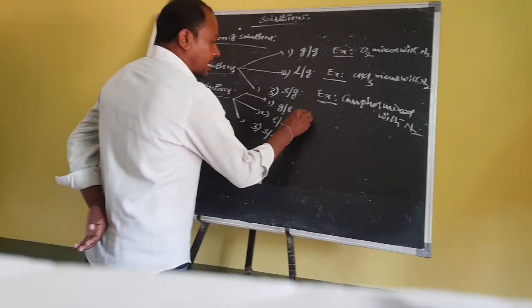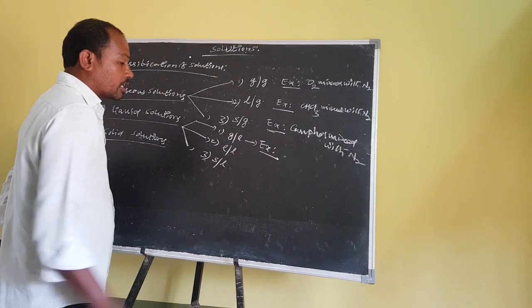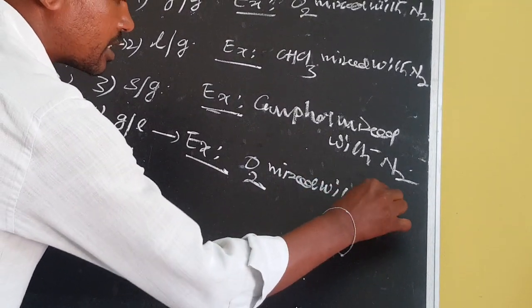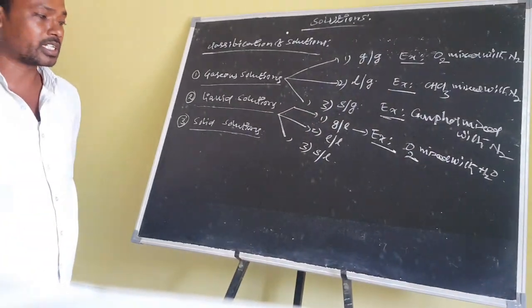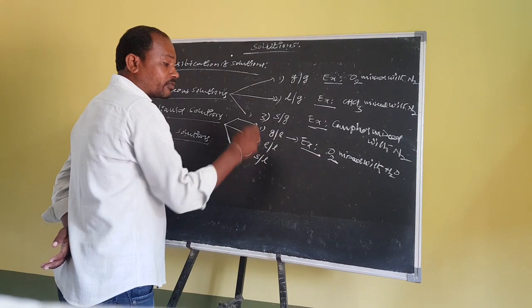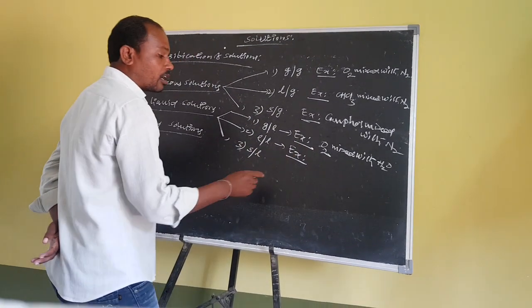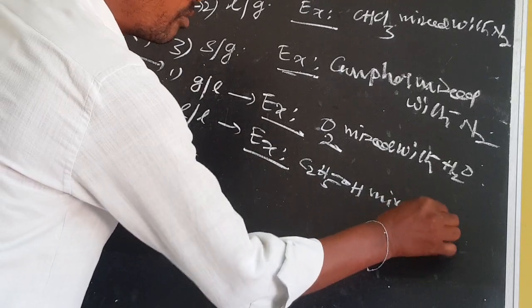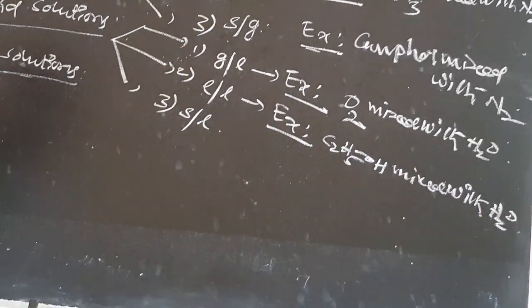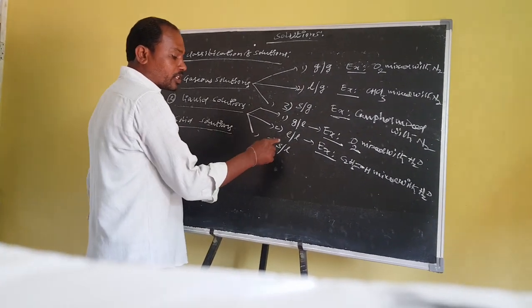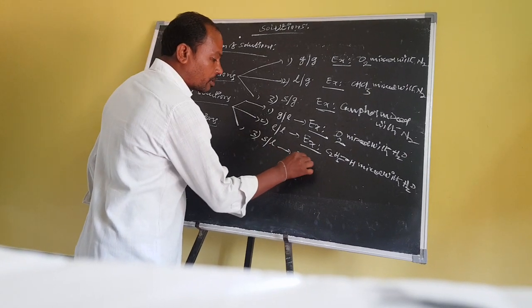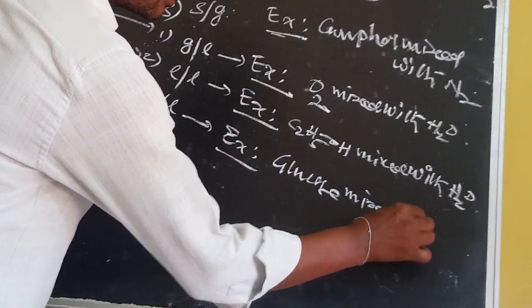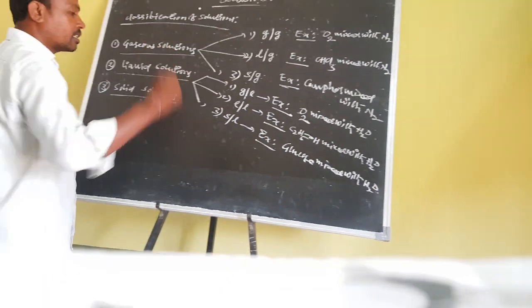Example for gas-in-liquid type solutions: oxygen mixed with water. Example for liquid-in-liquid type solutions: ethyl alcohol, C2H5OH, mixed with water. Example for solid-in-liquid type solutions: glucose mixed with water.